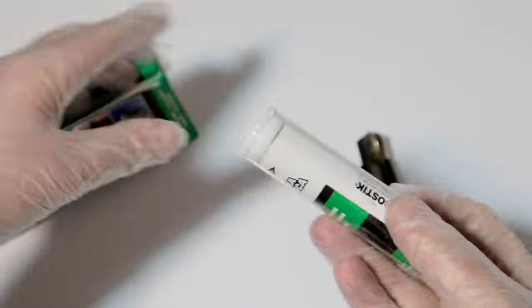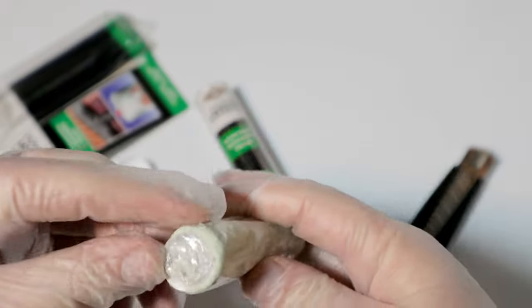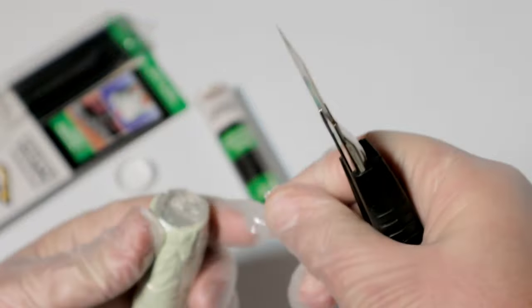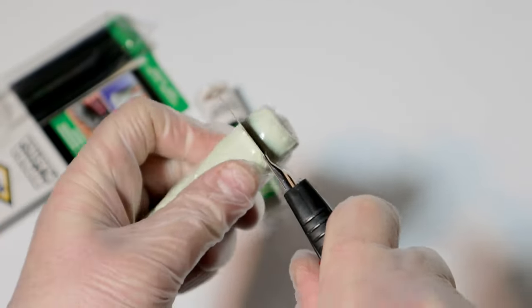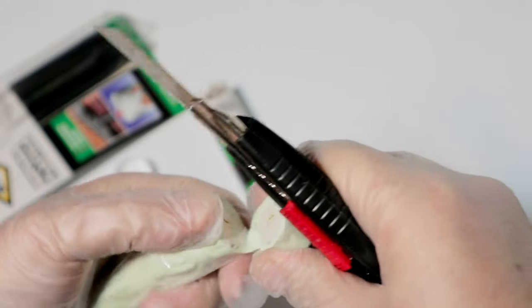The epoxy putty in stick repairs, welds, reconstructs and grouts any surface in plastic and glass resin, pipes, PVC pipes, plastic parts of bicycles, motorcycles and cars, boat holes, water tanks, tanks, ceramics, glass, concrete, and resin glass.